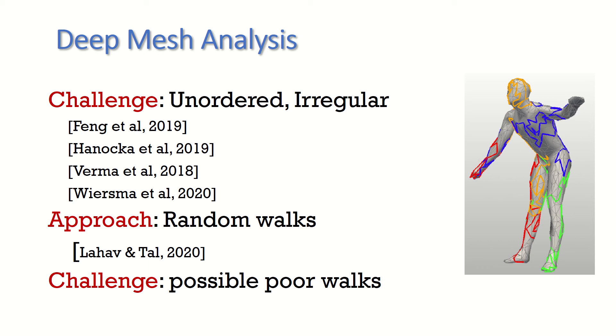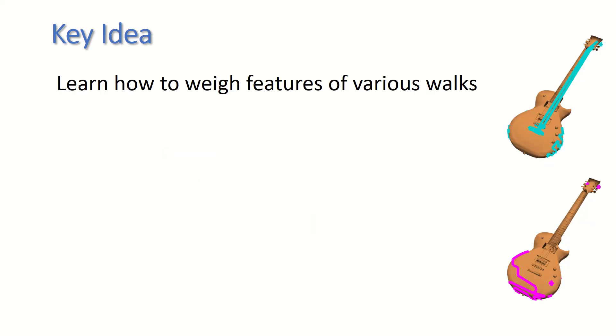While randomness is powerful, it might produce walks that do not represent the mesh well. Our key idea is to learn how to weigh the features of the various walks, exploiting the fact that they all represent the very same mesh. These two walks on the guitar are not equally good. However, they may provide each other information and jointly derive a good mesh description.